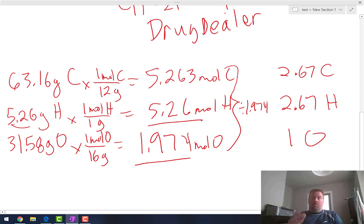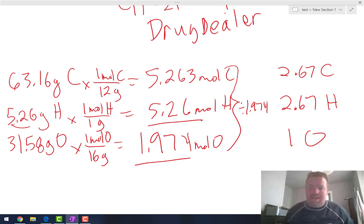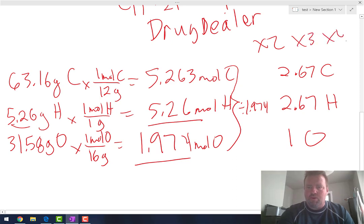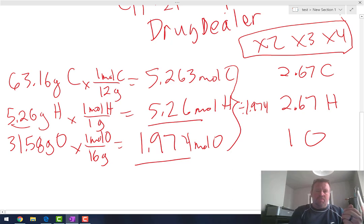Now, what that means is the chemical formula should be C2.67, H2.67, O. And this is the time where, well, obviously you can't have that because you have to have whole numbers. So at this point, you're either going to have to decide, do I multiply by 2, do I multiply by 3, or do I multiply by 4? Those are the only ones that you're ever going to have to multiply by.